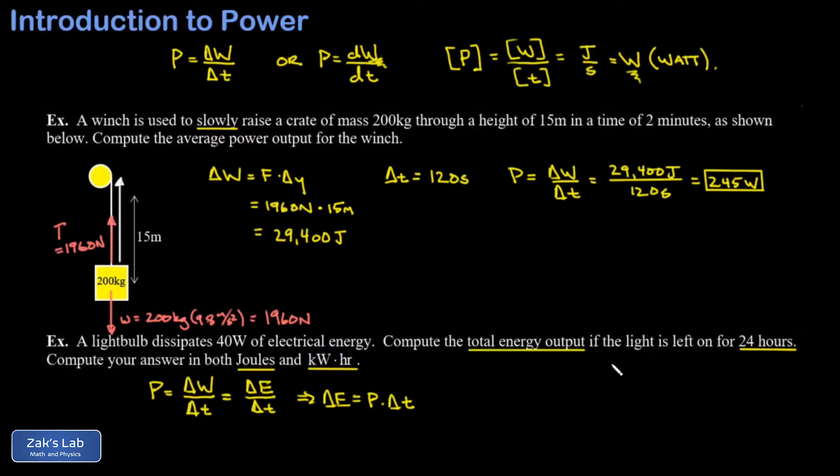I take my 24 hours and start multiplying by conversion factors: there's 60 minutes in an hour, 60 seconds in a minute. Everything cancels except the seconds, and I get 86,400 seconds.